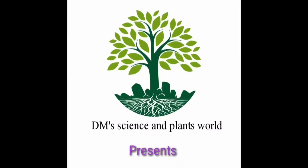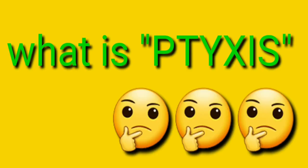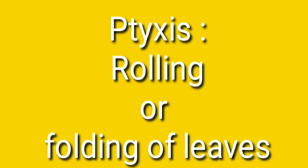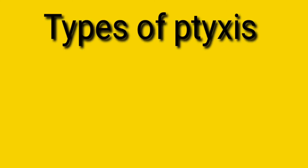DM Science and Plants World presents about Ptyxis. In this video we are going to discuss about what is Ptyxis, types of Ptyxis, and how Ptyxis helps in plant life. Ptyxis is the process of rolling or folding of leaves. Based on the folding or rolling manner, Ptyxis is classified into 7 types.